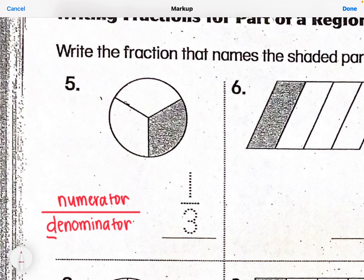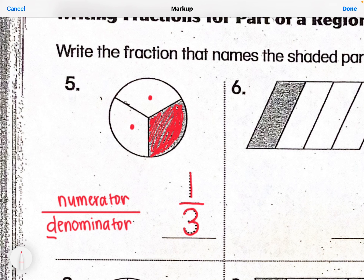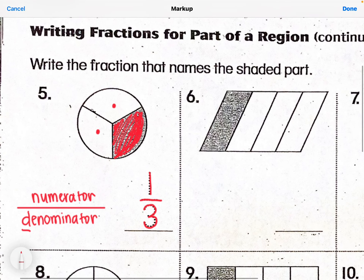Which is kind of what we did on the last worksheet. There were three total pieces on this shape — one, two, three equal pieces — so that's where they got the three as the denominator. To find the numerator, you need to figure out how many are colored in. There's one colored in, so that's the numerator. One out of three pieces are shaded, so we write one-third.